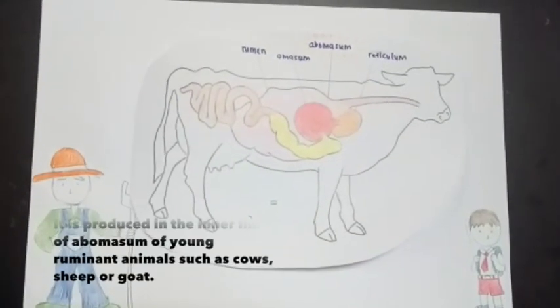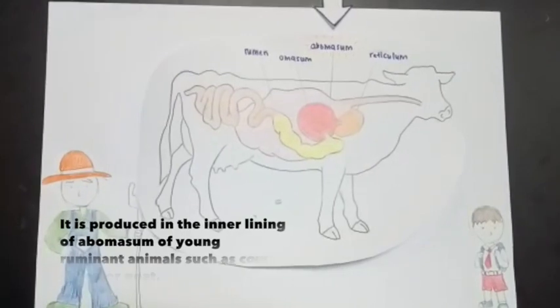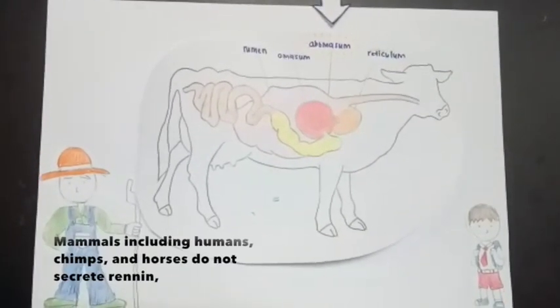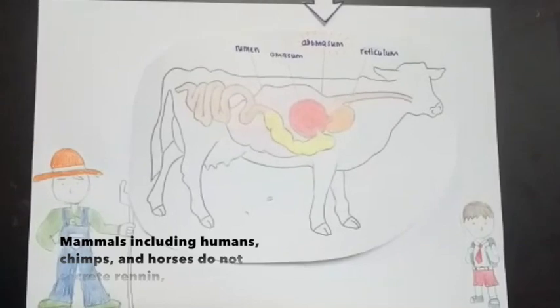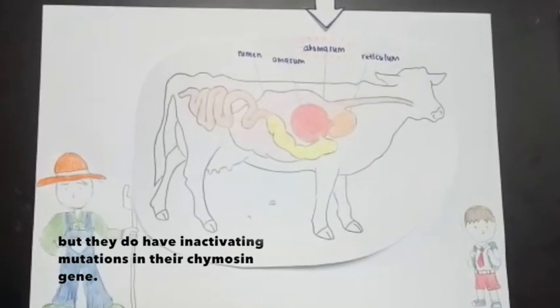It is produced in the inner lining of the abomasum of the young ruminant animals such as cows, sheep and goats. Mammals including humans, pigs and horses do not secrete renin but they do have inactivating mutations in their chymosin gene.